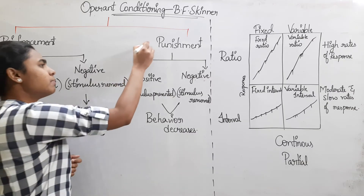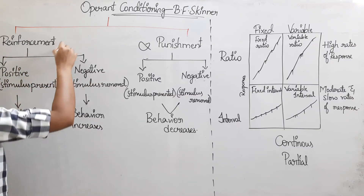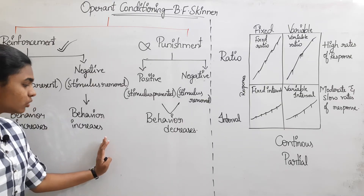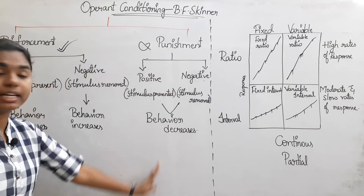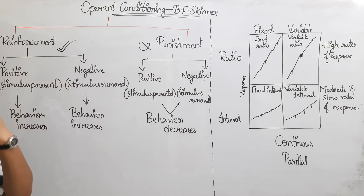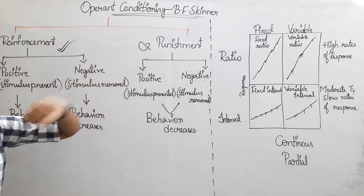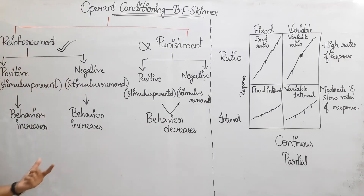If we use maximum punishment, behavior decreases. If we use positive reinforcement, behavior increases. If we use reinforcement, we increase behavior. If we use punishment, we decrease behavior. If we use positive rewards, we increase behavior. This is reinforcement schedules.